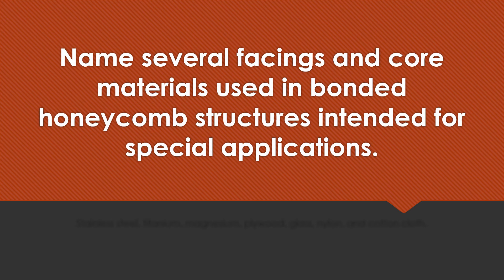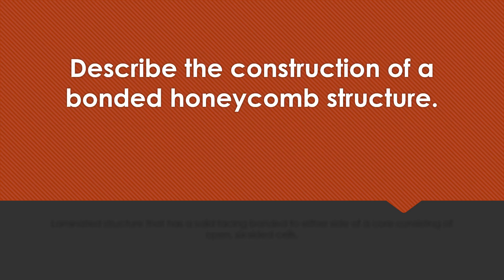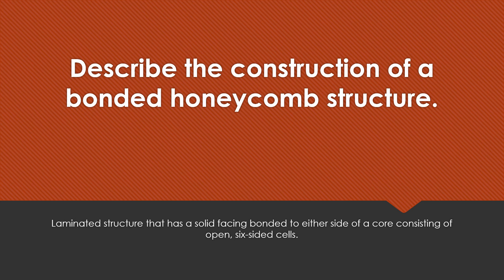Name several facings and core materials used in bonded honeycomb structures intended for special applications. Stainless steel, titanium, magnesium, plywood, glass, nylon, and cotton cloth can be used as a facing. Describe the construction of a bonded honeycomb structure. It is a laminated structure that has solid facing bonded to either side of a core consisting of open six-sided cells.